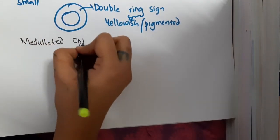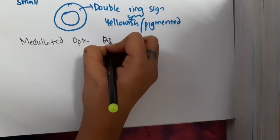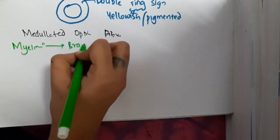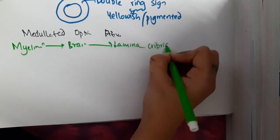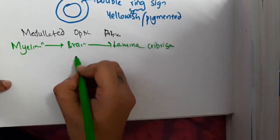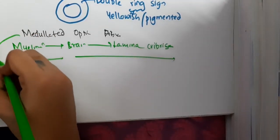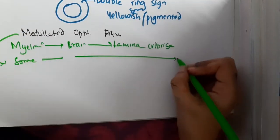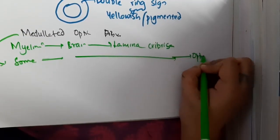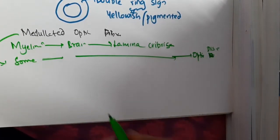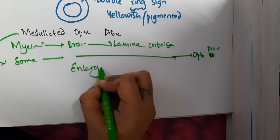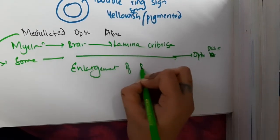Finally, there are medullated optic fibers. Normally, myelination starts from the brain and ends at the lamina cribrosa. But in medullated optic fibers, it extends beyond the lamina cribrosa into the optic nerve or optic disc, causing enlargement of the blind spot.